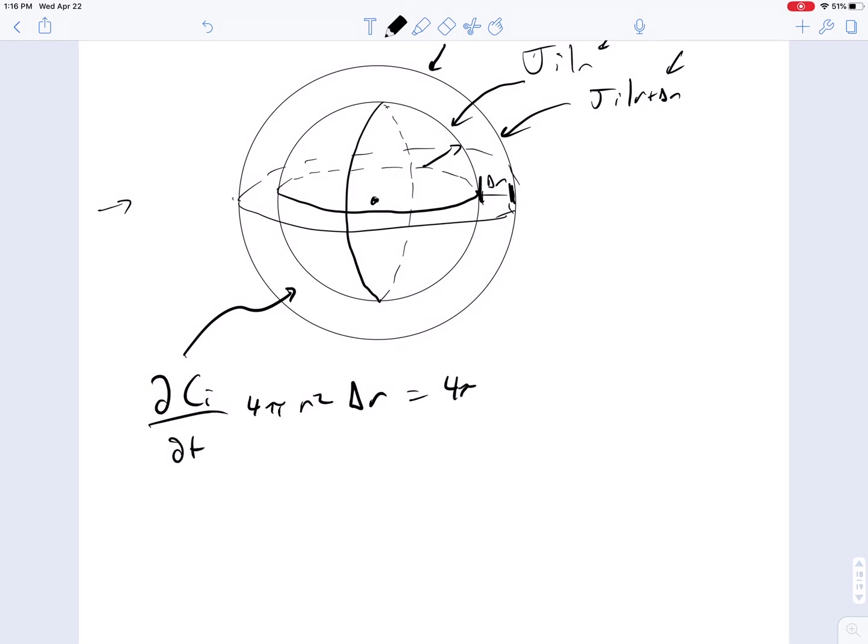This equals, so we also have to include the area, 4 pi ji in the r direction at position r, times r squared, minus the flux out, which is going to be ji at r plus delta r, times r plus delta r squared, because it's an entire surface area. So before we did cylindrical, it was r times l, but now we have r squared and r plus delta r squared.